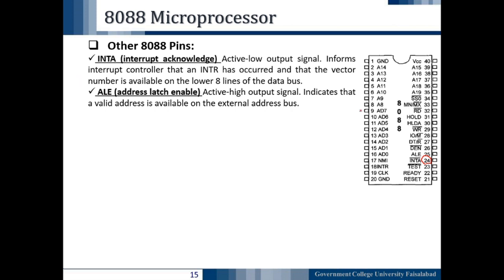The next pin is ALE — Address Latch Enable — which is pin number 25. It is an active high output signal that indicates a valid address is available on the external data bus. It is used for the separation of the multiplexed address and data bus as the address bus.